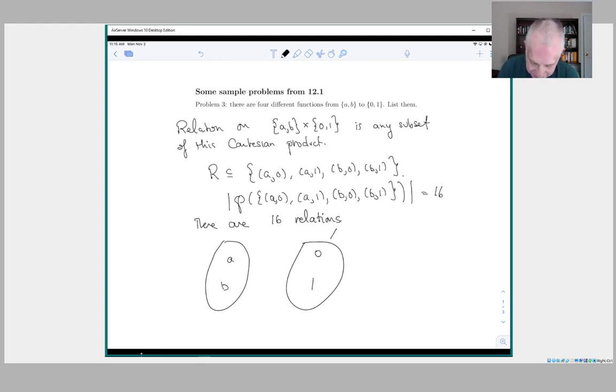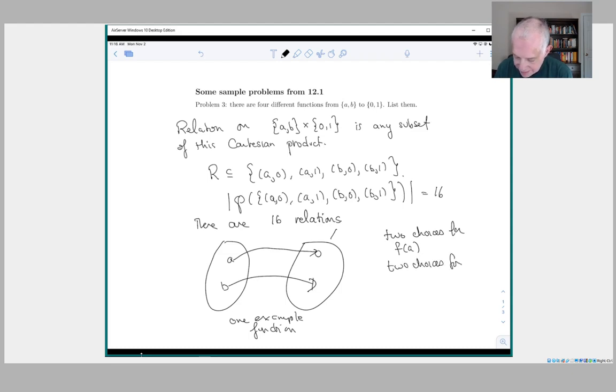So for example, we could send A to 0 and we could send B to 1. This is one example function. But if we want to think about this in the language of counting problems that we worked at before, we have basically we must send A somewhere so we have two choices for where to send A and we have two choices for F of B. So all together we have four choices.